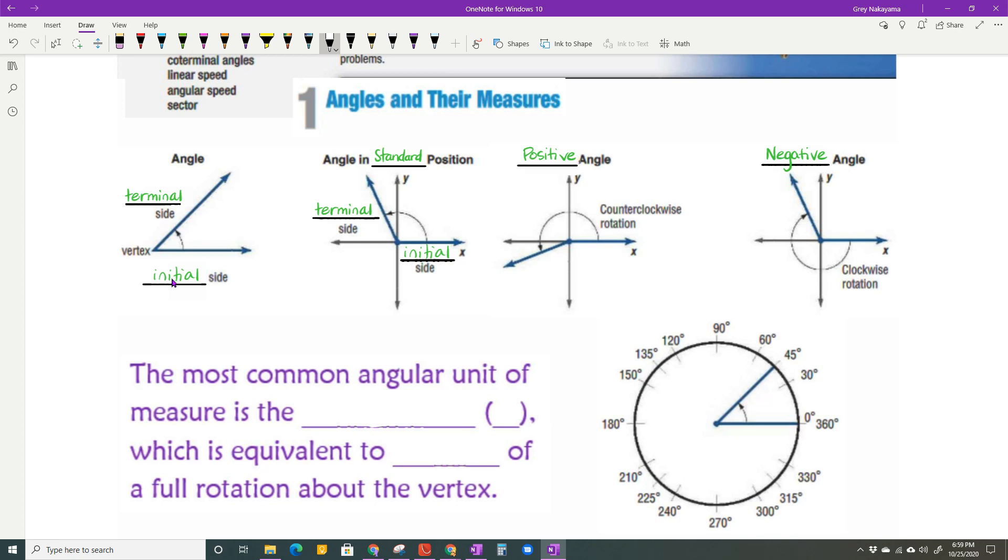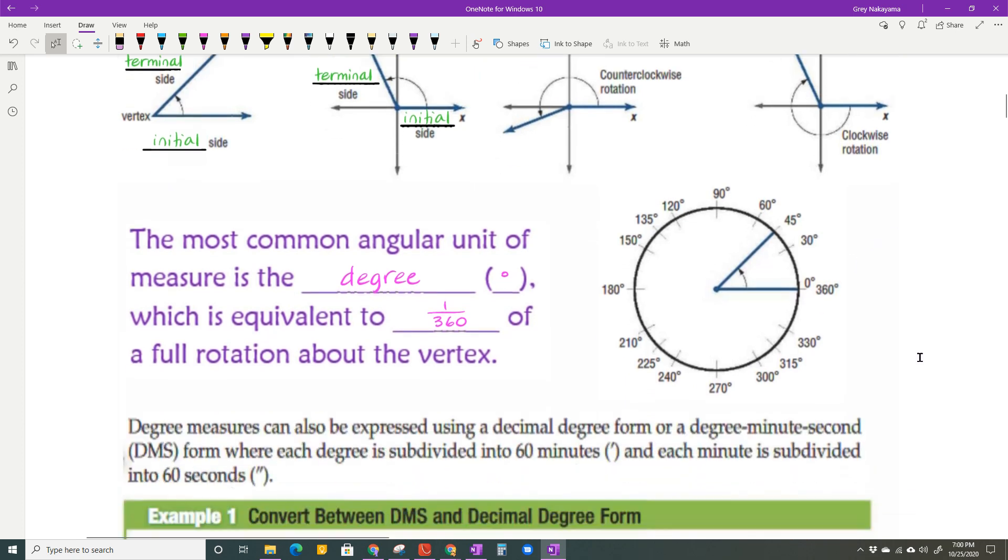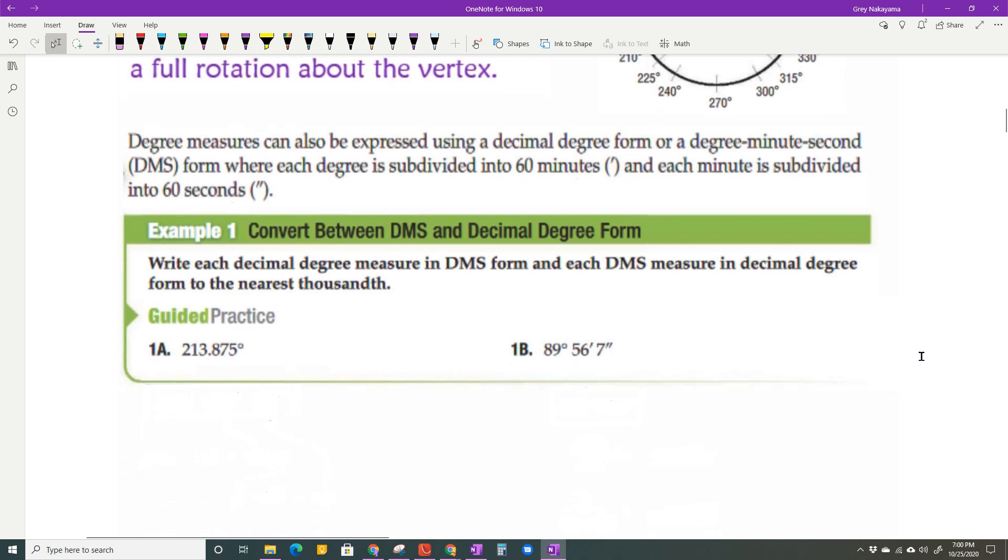Now, the most common unit of measure for angles is the degree with that symbol, and that is equivalent to 1/360th of a full rotation about a vertex. So it's basically just taking a circle, they divided it into 360 equal parts, and that's what a degree is. Now we have two different ways of writing a degree measure. This might be something new that you didn't do in Algebra 2 last year, and that is you can either have a decimal degree form, or you can have a degree minute second form, or what is referred to as DMS.